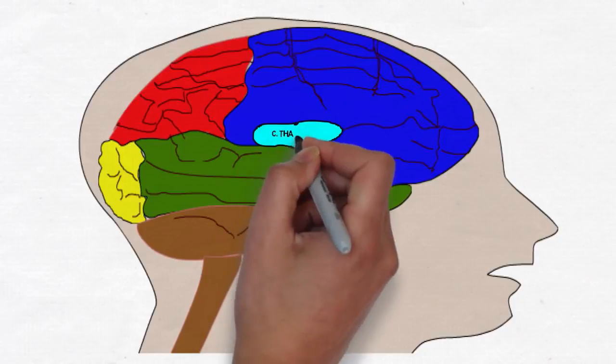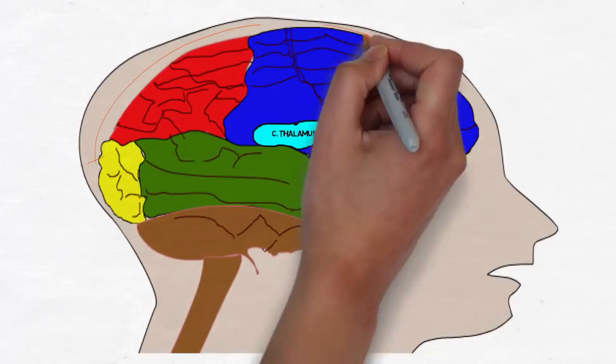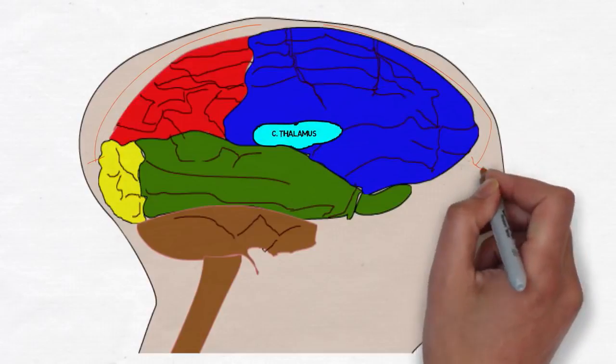The thalamus is the central hub for sights and sounds. The thalamus breaks down incoming visual cues by size, shape, and color and auditory cues by volume and dissonance, and then signals the cortex.